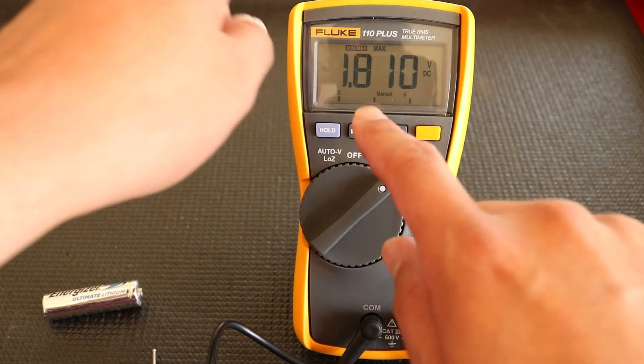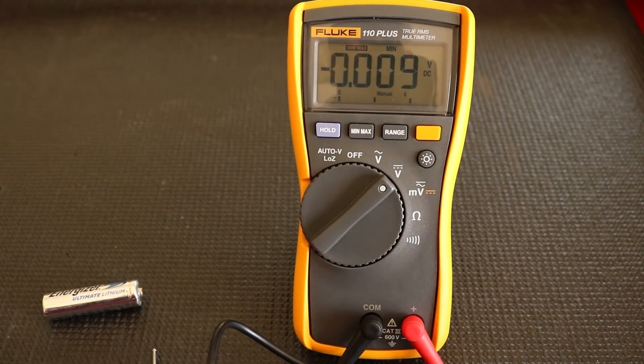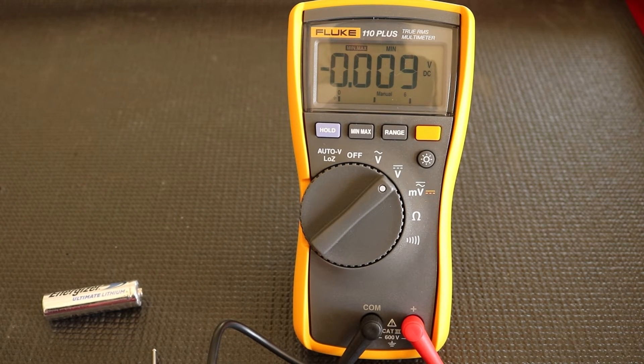When I press the button one more time, that gives us our minimum reading of negative 0.009 volts DC.